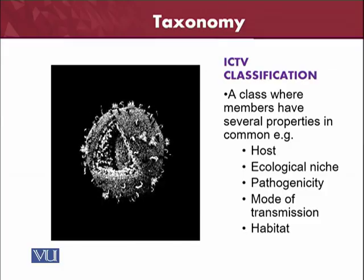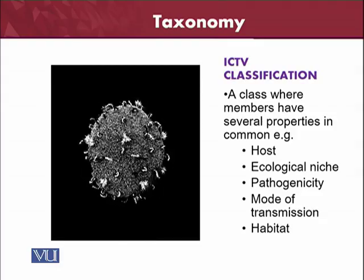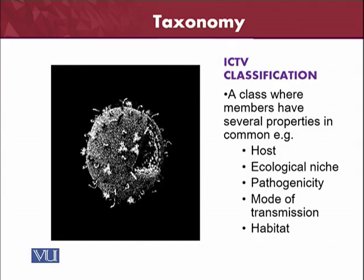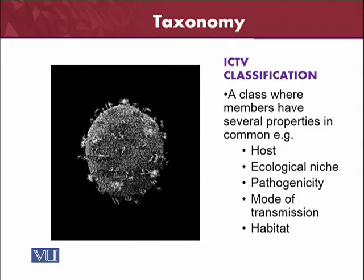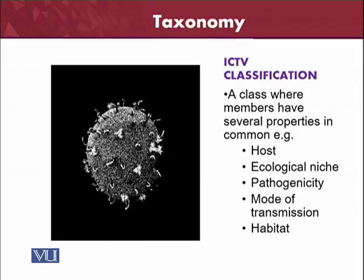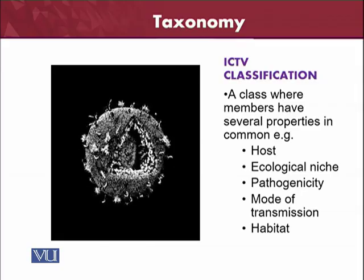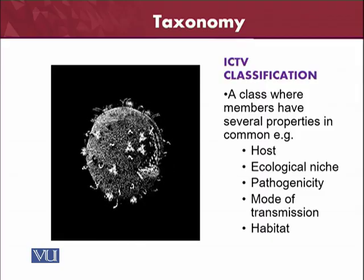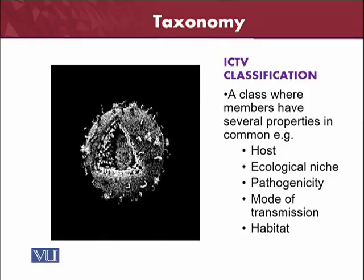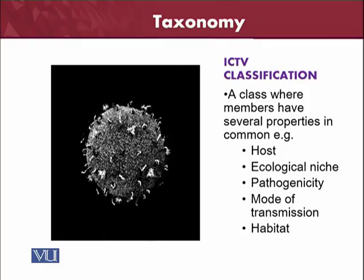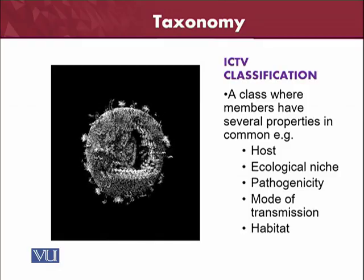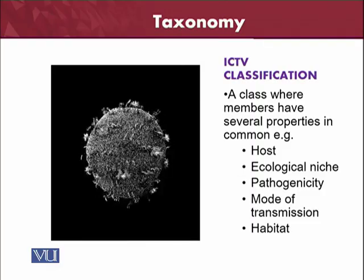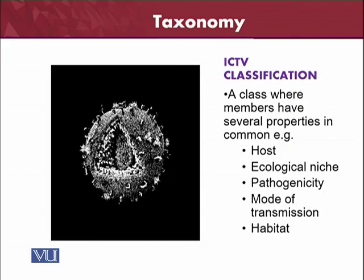The ecological niche is another criterion — ecologically the viruses are important in terms of which organisms they can attack. Then pathogenesis: different viruses have different kinds of pathogenesis, and on the basis of pathogenesis they are classified in the ICTV system. Mode of transmission is also a criterion — some viruses are directly transmitted via nucleic acid, some are transmitted through different ways. Habitat is also considered.